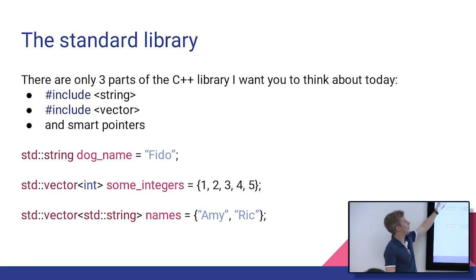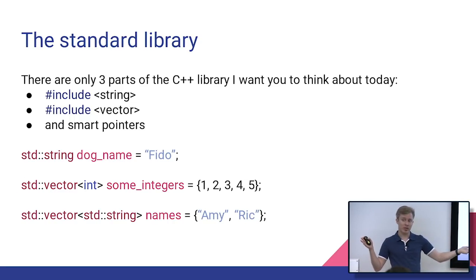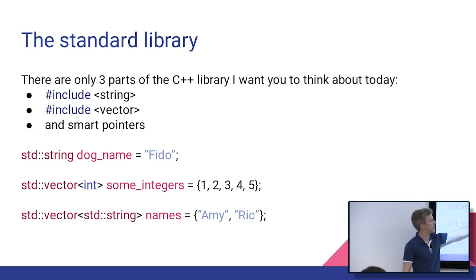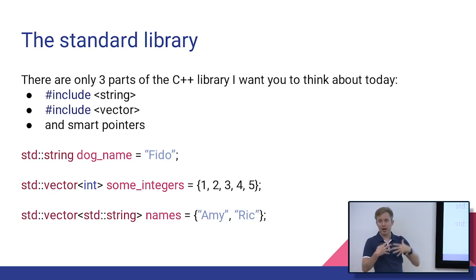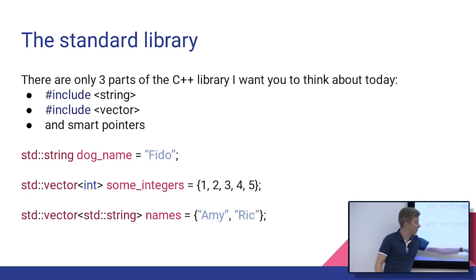String, you're familiar with that. I would say std for standard, string, dog name equals FIDO. So vector is just a way to have some contiguous memory. And it's kind of like, I don't want to use the word list, but it's just an array. It's closer to an array. But it can dynamically grow and shrink as needed. So here I have a standard vector of integers. And I'll just initialize it, one, two, three, four. And then I could also kind of combine these. I have a standard vector of strings. So now I'm containing the names Amy and Trick.